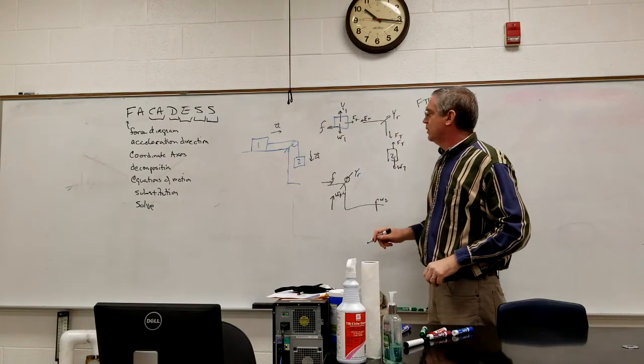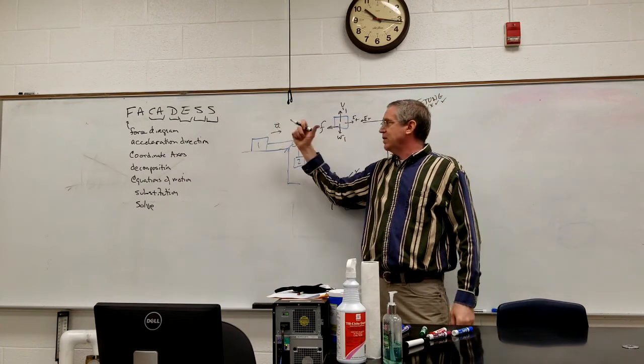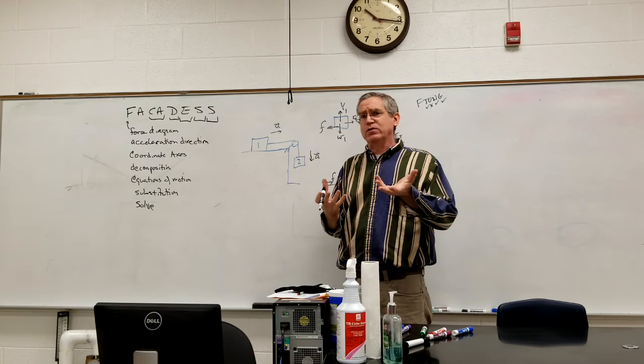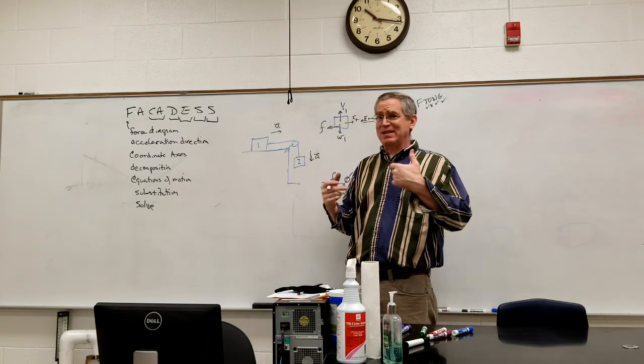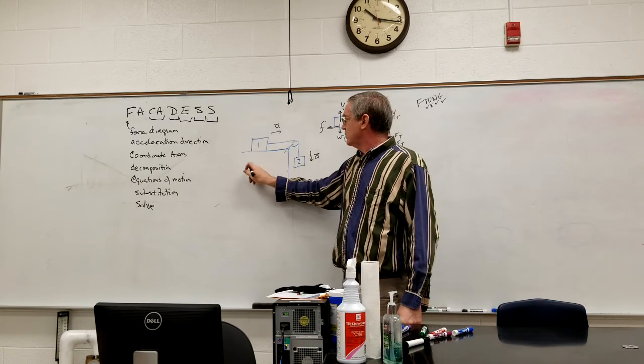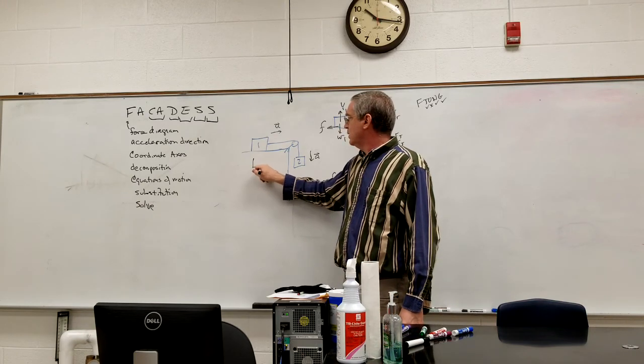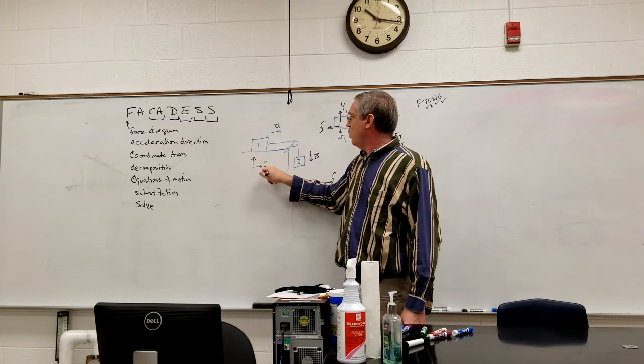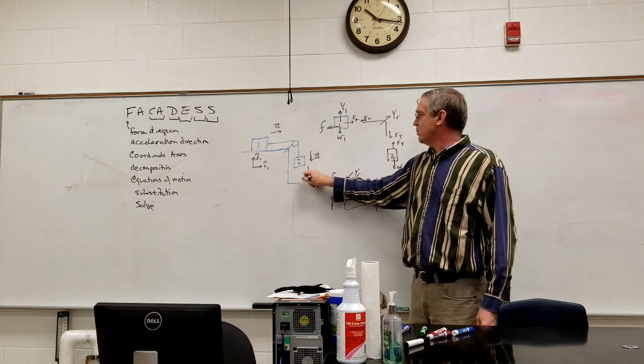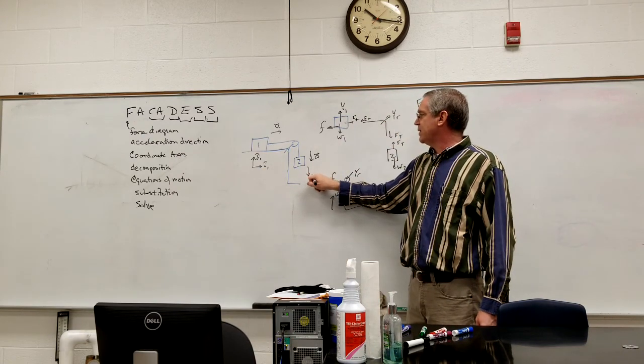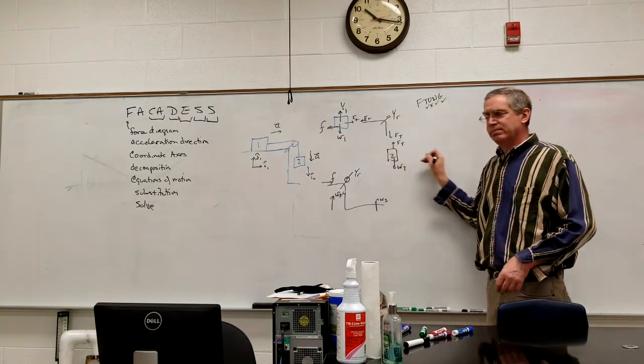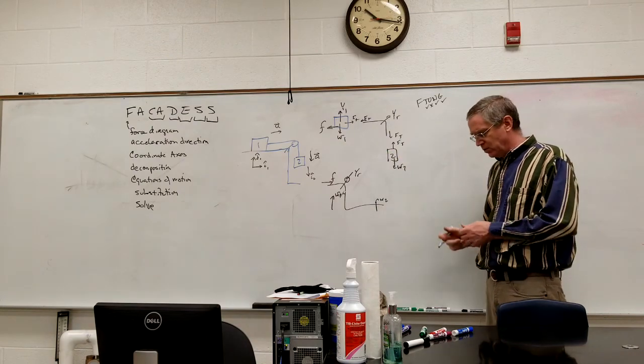So therefore, this acceleration is in that direction. So I'm going to set up a coordinate system, a different coordinate system for each. Now it's possible to set up a coordinate system that's the same for both, not required though. So I'm going to set up a coordinate system here, I hat, I one hat, and J one hat. Over here, since my acceleration is downwards, I'm going to let that be my I two hat. And I don't need a J two hat. There's no forces that are perpendicular to that acting on mass two.